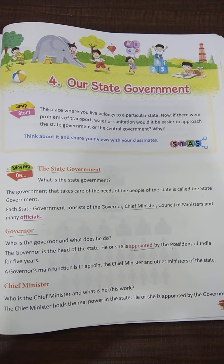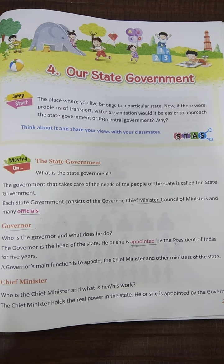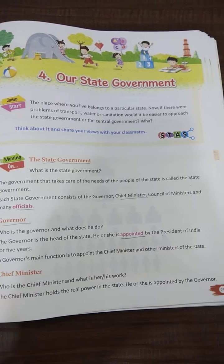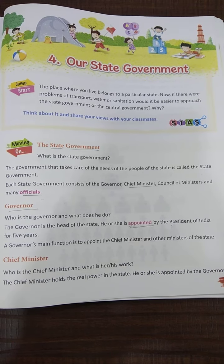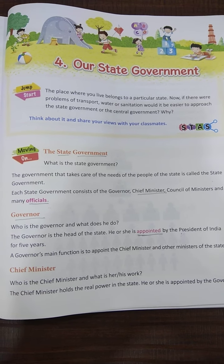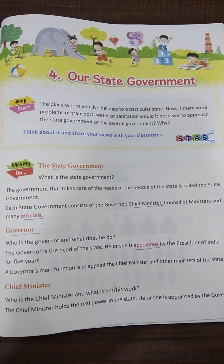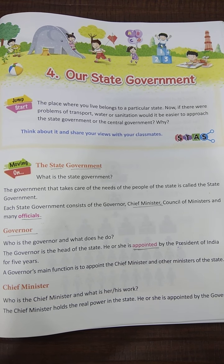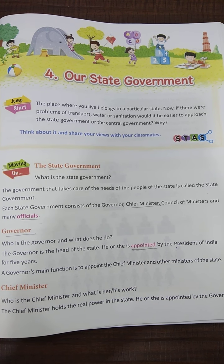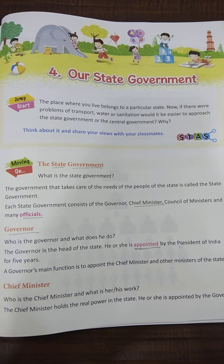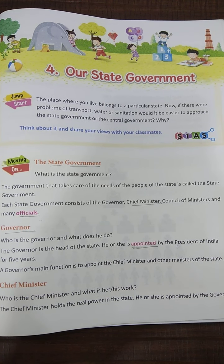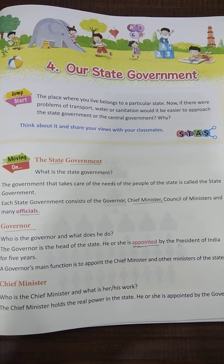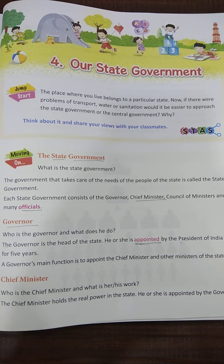First is the governor. Who is the governor and what does the governor do? Governor is the head of the state. He or she is appointed by the president of India for 5 years.